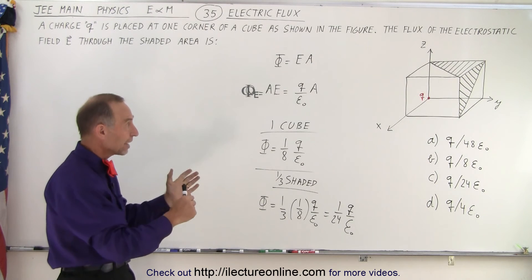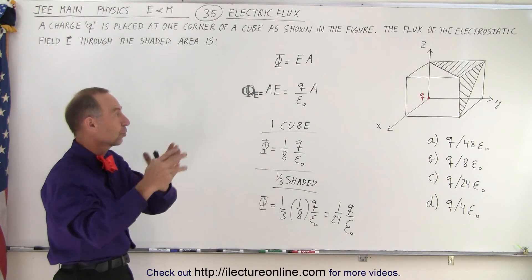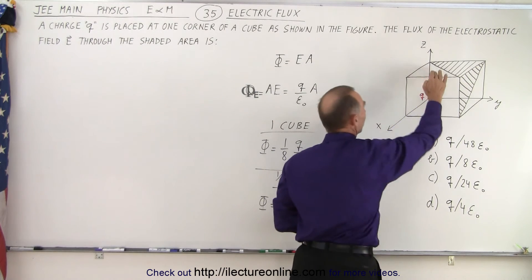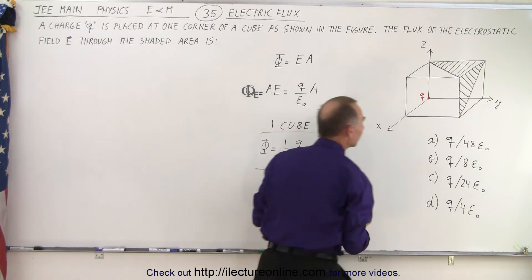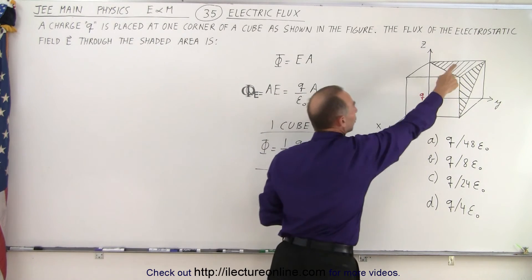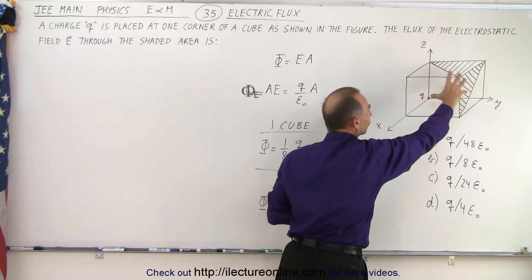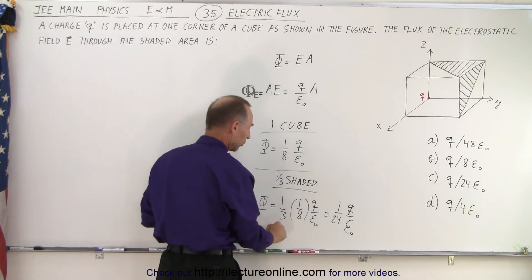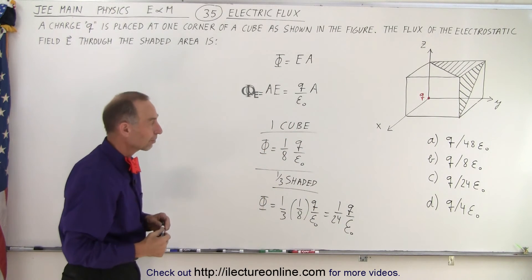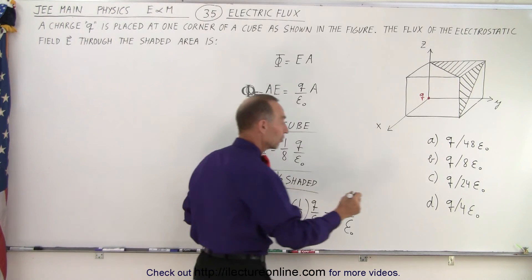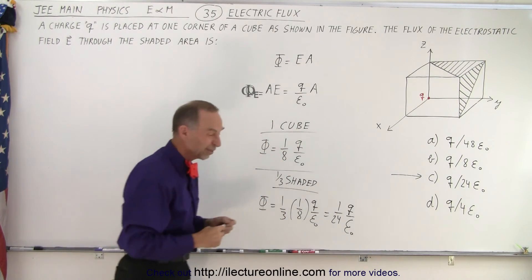So, again, one out of eight cubes. So, one-eighth of the flux goes to the entire cube. These three sides, side one, side two, side three. The other sides are taken up by the other cubes. And only one-third of the three sides is shaded. Two-thirds is not shaded. So, we take one-third of one-eighth or one-twenty-fourth of Q over epsilon sub-naught. Which means that answer C is the correct answer.